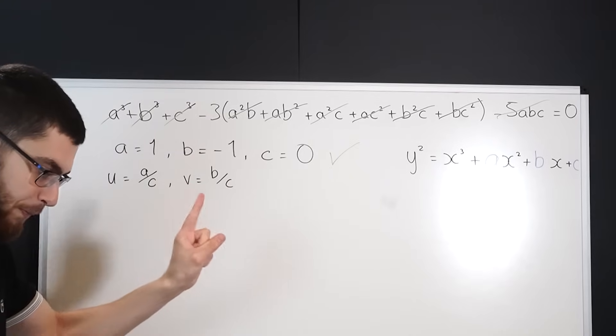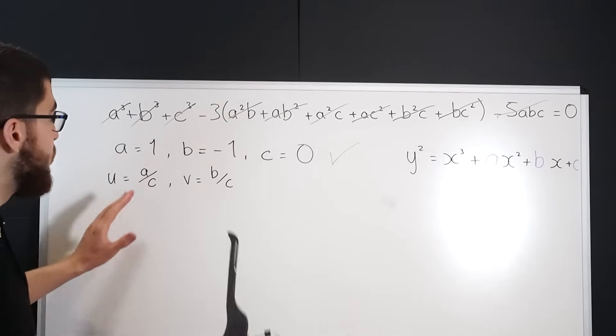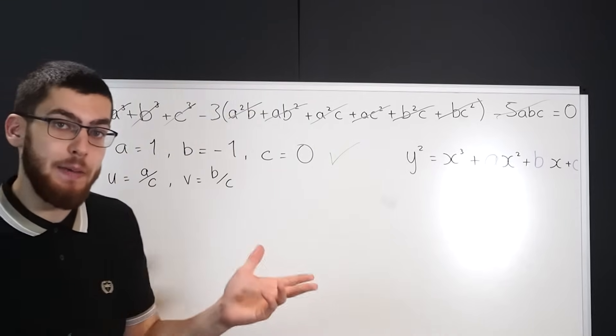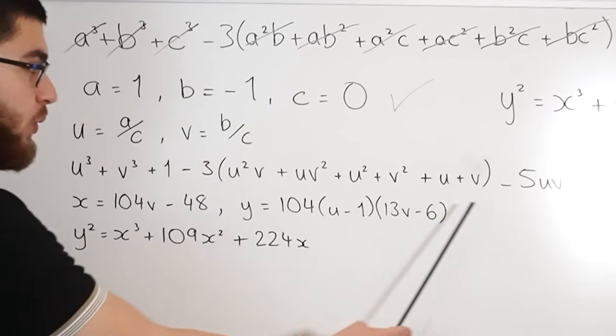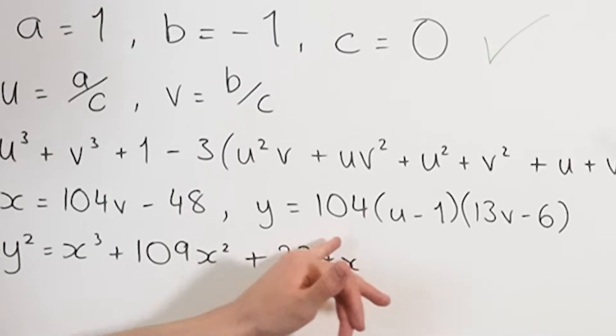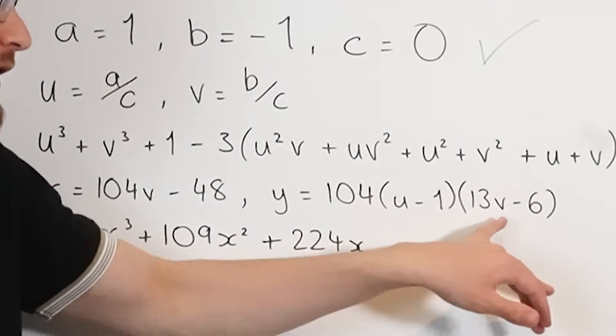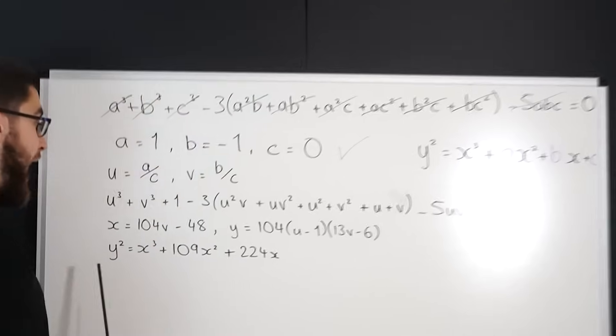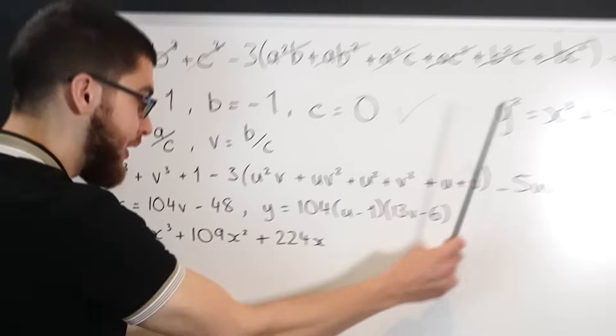We've not just got one single point that we need to find. So really we just need to find the ratios between a, b and c. Then you get this big long equation and you let x equal 104v minus 48 and y equal 104, u minus 1, 13v minus 6 obviously and then you get this as our Weierstrass form.